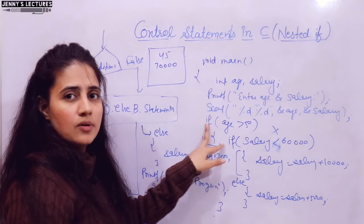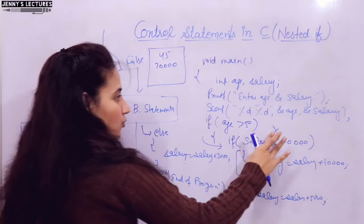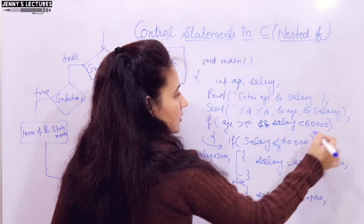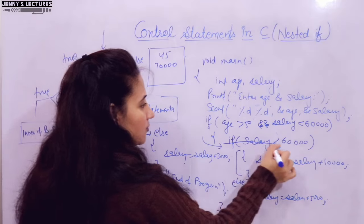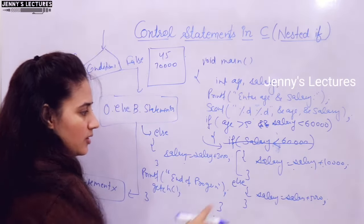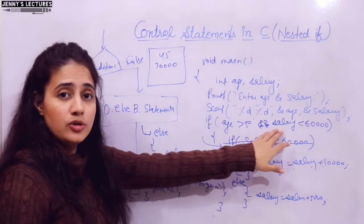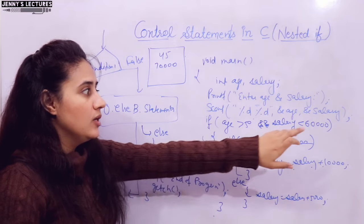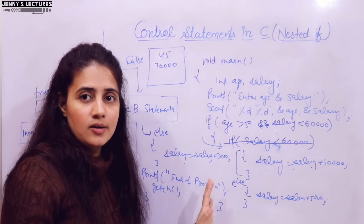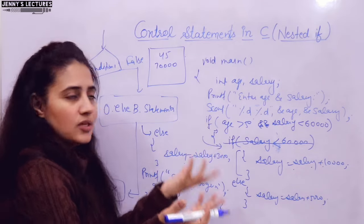Rather than writing two nested ifs, can we use a single if? Yes — using the logical AND operator. Write: if (age > 50 && salary < 60K), then increment by 10,000; else increment by 5,000. The outer else stays the same. You can check multiple conditions this way — three, four, five conditions — just keep adding logical AND with more conditions. This shows that nested if can sometimes be replaced by a single if with logical AND.